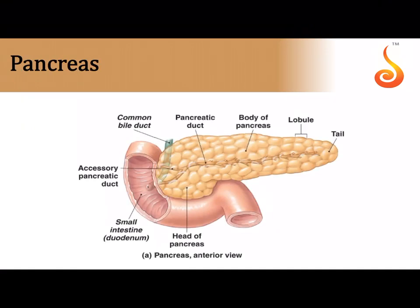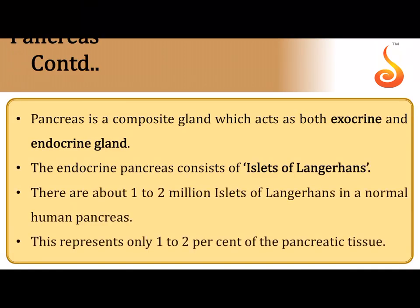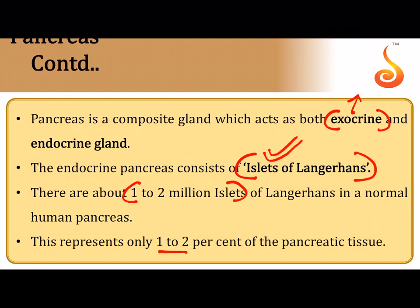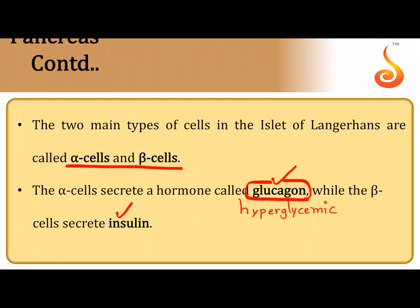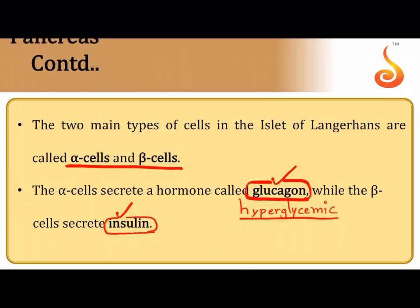The pancreas is a dual or compound gland with an endocrine part called the islets of Langerhans and an exocrine part that secretes pancreatic juice. There are about 1 to 2 million islets of Langerhans, making up only 1 to 2 percent of pancreatic tissue. The islets contain alpha cells, which secrete glucagon (the hyperglycemic factor that increases blood glucose level when starving), and beta cells, which secrete insulin (the hypoglycemic factor that brings down blood glucose level after a meal).